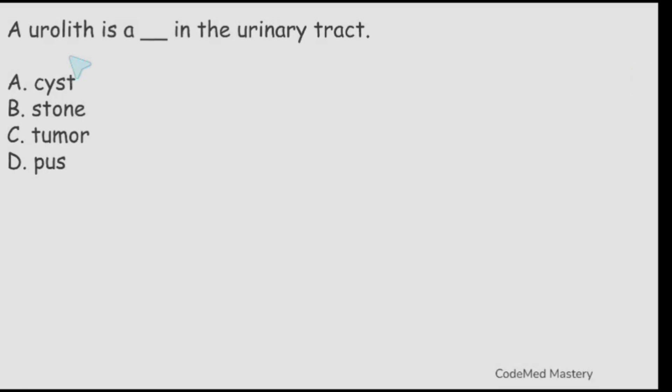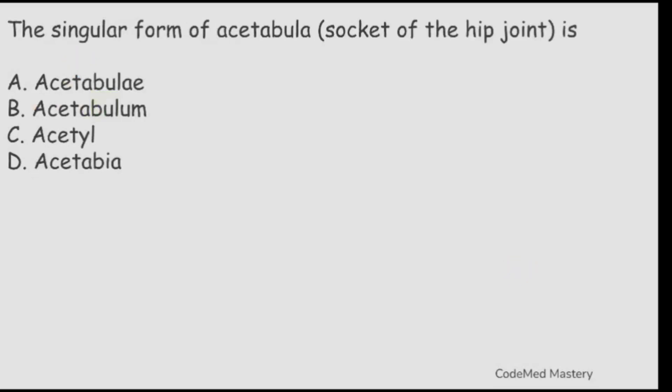Next question: a urolith is a blank in the urinary tract. Option A: cyst. Option B: stone. Option C: tumor. Option D: pus. The right answer is option B, stone, because the term 'lith' means stone.